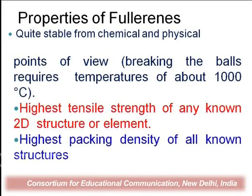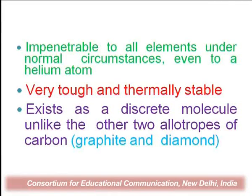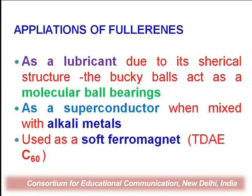Other properties of Buckminster fullerene are that it is equally stable from chemical and physical points of view. Breaking the ball requires a very high temperature of about 1000 degrees centigrade. It has highly tensile strength in its two-dimensional structure and the highest packing density of all known structures. It is impenetrable — very stable — to all elements under normal circumstances, even to the helium atom. It is thermally stable and exists as discrete molecules, unlike the other two allotropes of carbon, graphite and diamond.